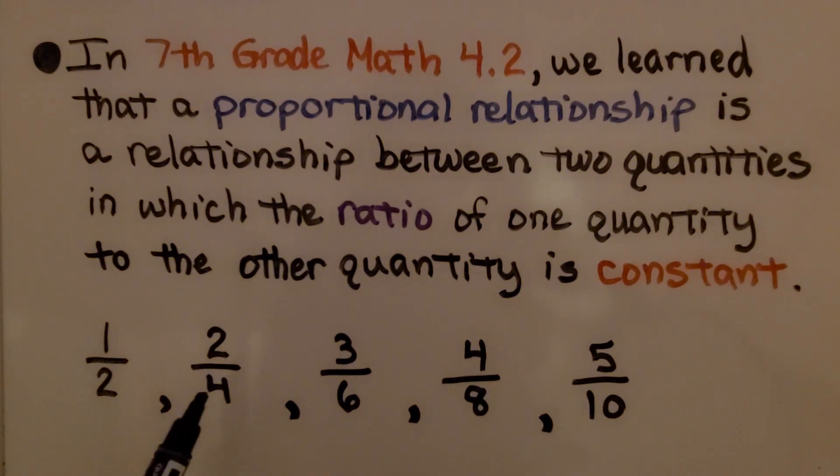Here we have 1 half, 2 fourths, 3 sixths, 4 eighths, 5 tenths. As the numerator is going up by 1, the denominator is being multiplied by 2.